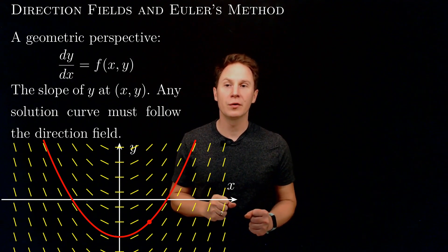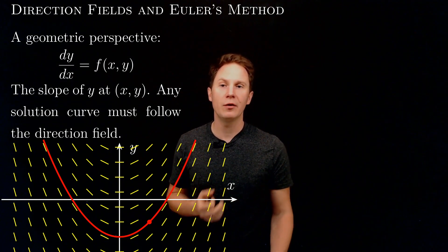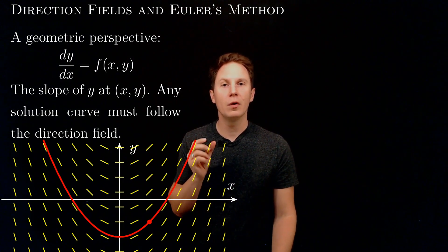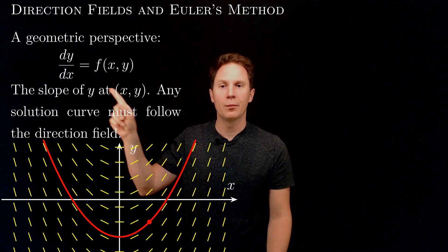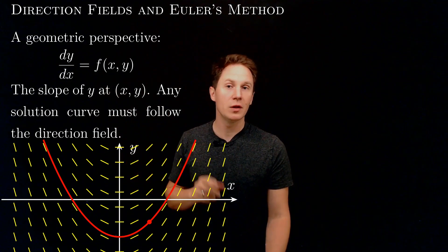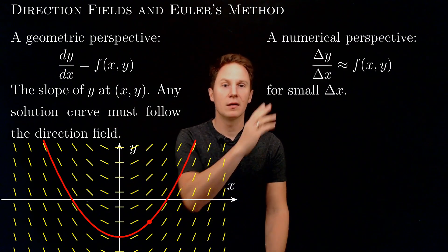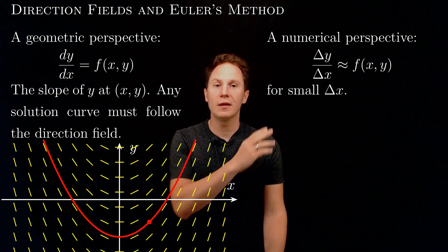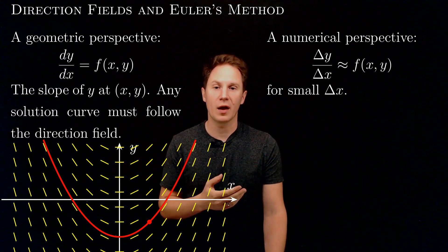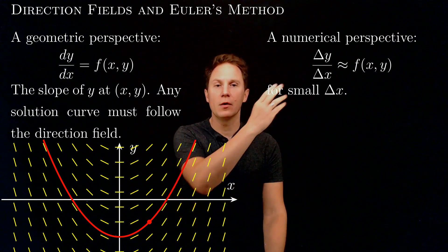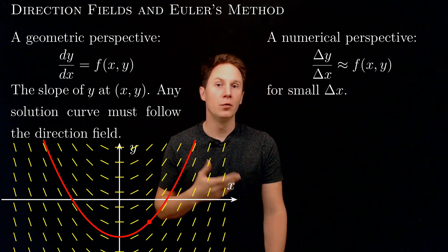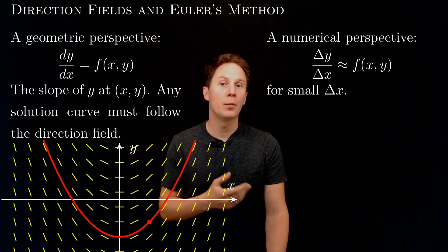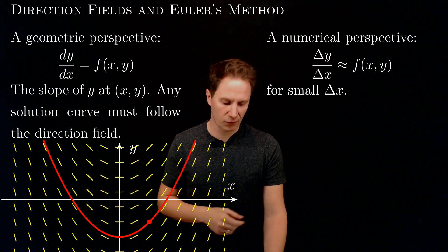These first-order ODEs also have a very nice numerical perspective that we get by taking a small step size along the x-axis and approximating the derivative dy/dx by the difference quotient Δy/Δx. So Δx is the small step size along the x-axis, and therefore the change in values of the solution — that is Δy — is approximately equal to f(x, y) times Δx.